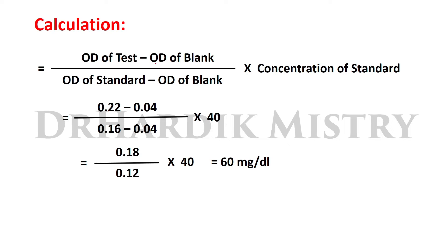Calculation: (OD test − OD blank) ÷ (OD standard − OD blank) × concentration of standard = (0.22 − 0.04) ÷ (0.16 − 0.04) × 40 = 0.18 ÷ 0.12 × 40 = 60 mg per dL.